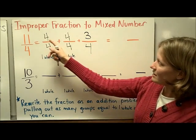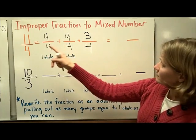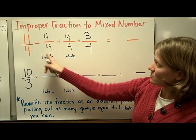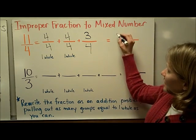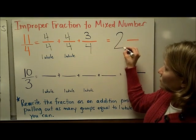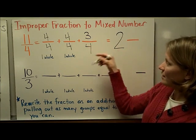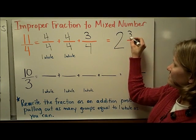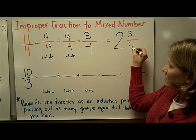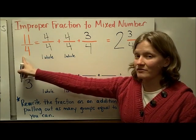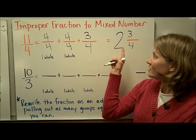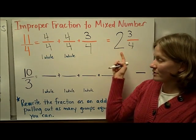So when I read this, here's a whole and here's a whole — that is 2 wholes and 3 fourths. So the improper fraction 11 fourths written as a mixed number is 2 and 3 fourths.